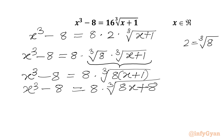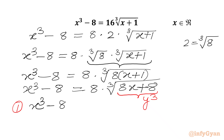Now it's time for substitution. I will consider the radicand 8x + 8 = y³. So our first equation becomes x³ - 8 = 8·∛(y³). The cube root and cube cancel, leaving x³ - 8 = 8y. This is equation number 1.